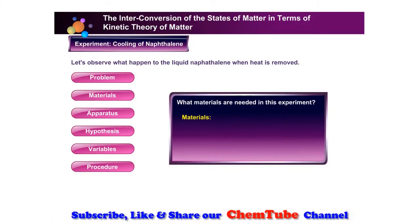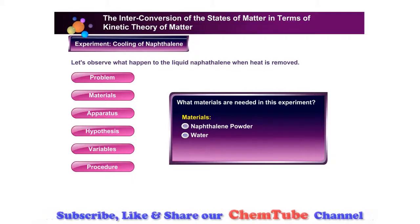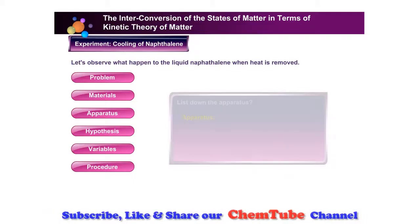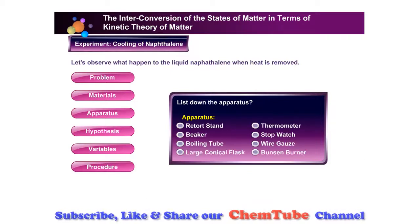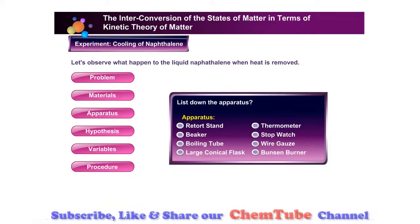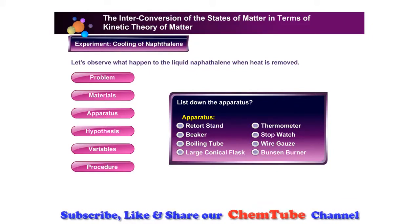What materials are needed in this experiment? Naphthalene powder and water. Apparatus: retort stand, beaker, boiling tube, a large conical flask, thermometer (0°C to 100°C), stopwatch, wire gauze, Bunsen burner.